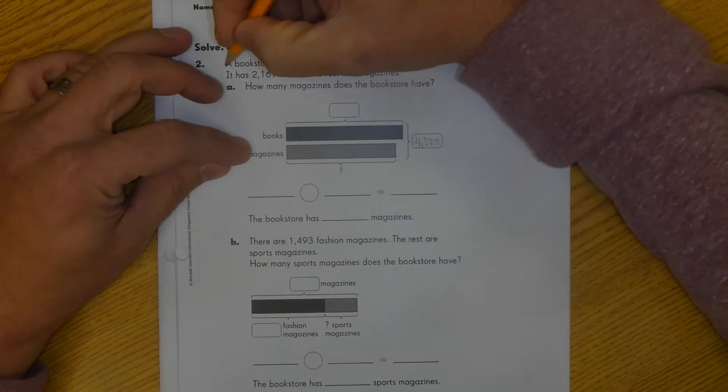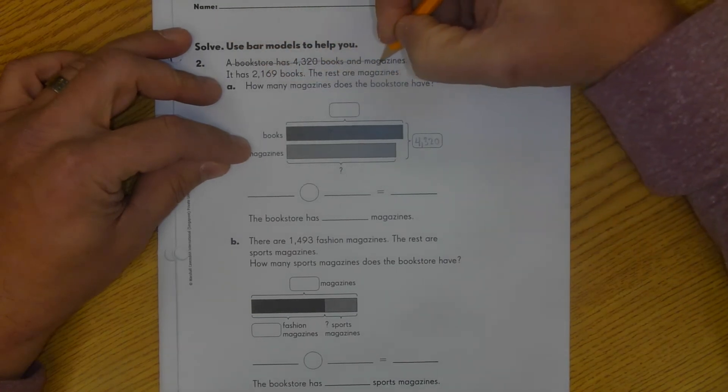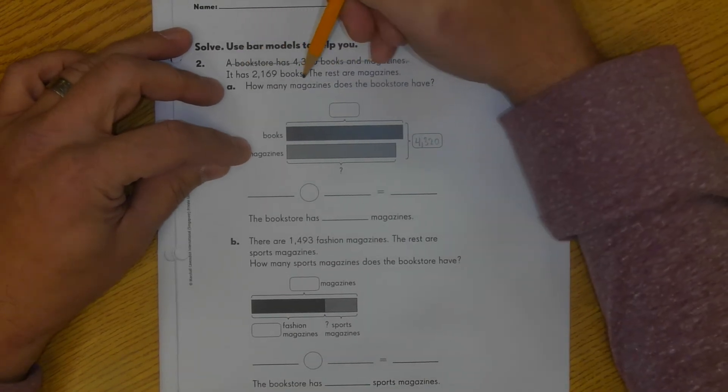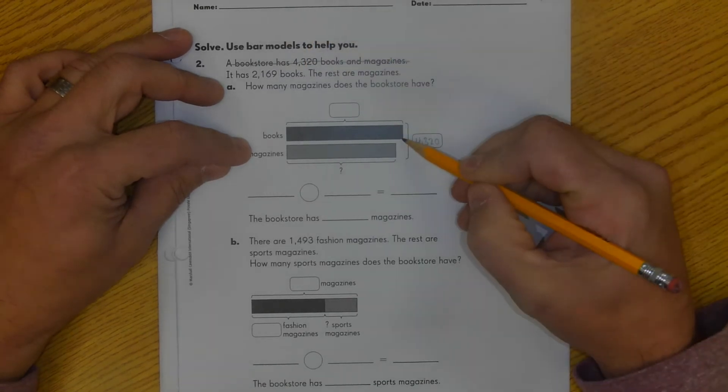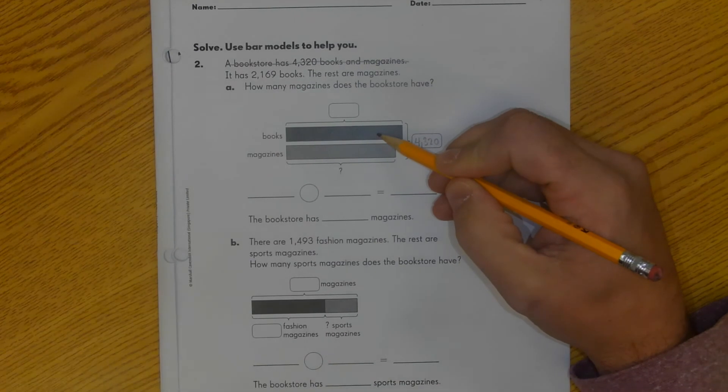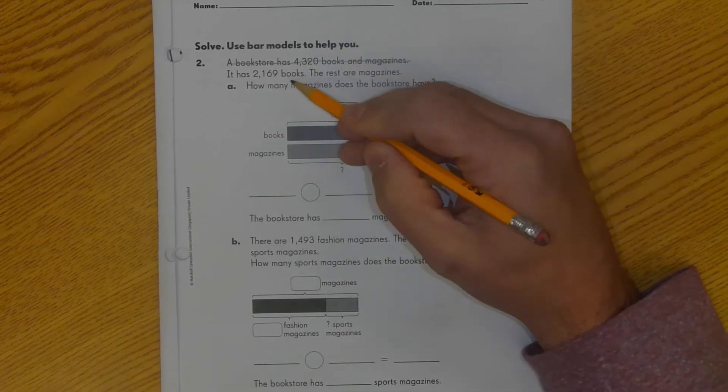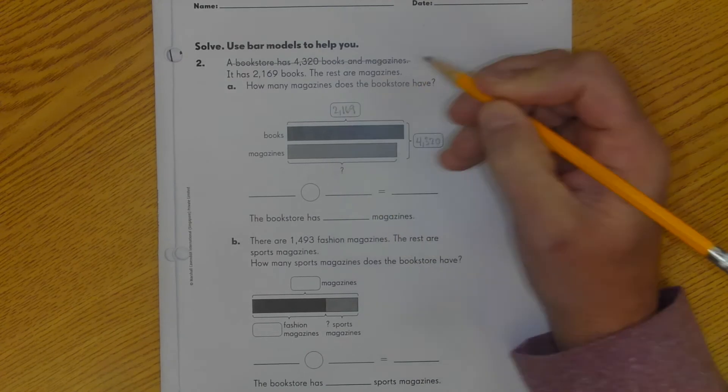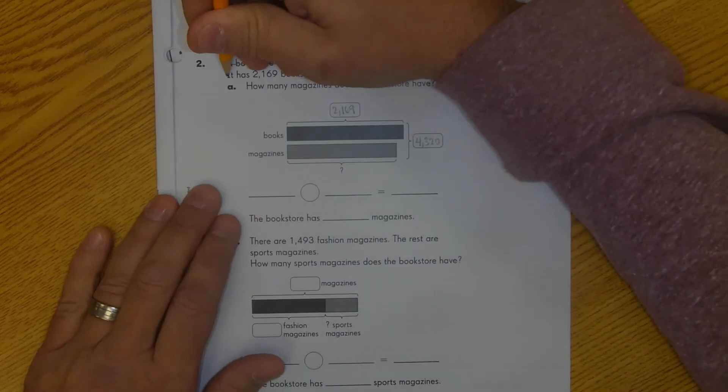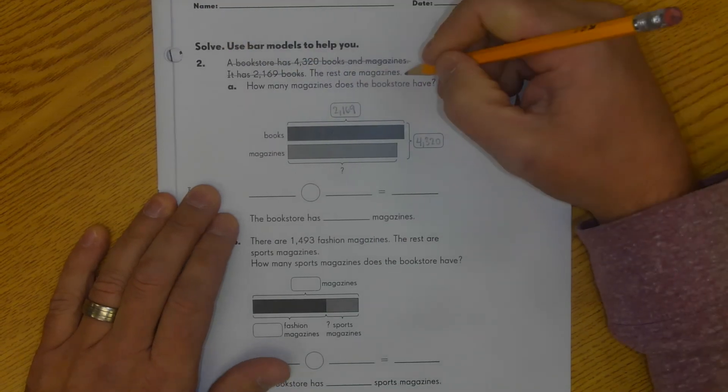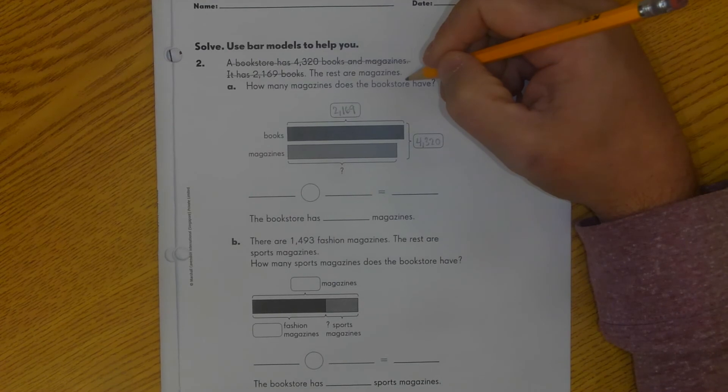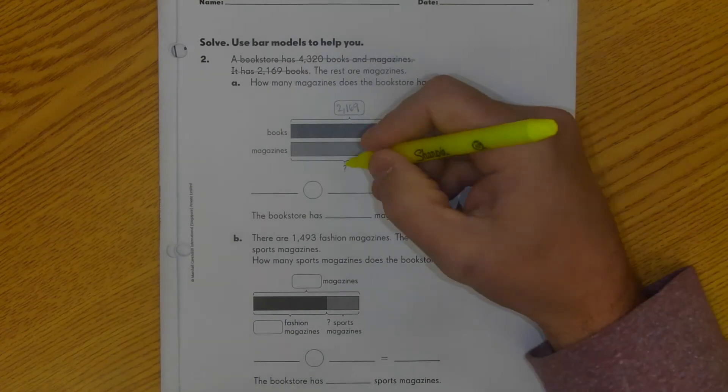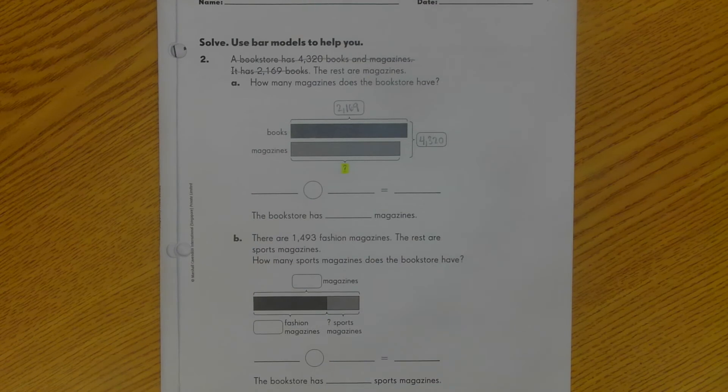I'm done with that part, so I'm going to make a line through it in pencil. It has 2,169 books. So I look again down at my bar model and I see my books bar is darker or black in this case compared to gray for magazines. Books is 2,169. So I'm going to take that number and I'm going to put it in the books bar. And then I'm going to cross that one off. The rest are magazines. So if I don't know that number, I know I'm going to need to. That's where my question mark is down here. So I'm going to take and highlight that because this is my missing piece that I'm trying to find.